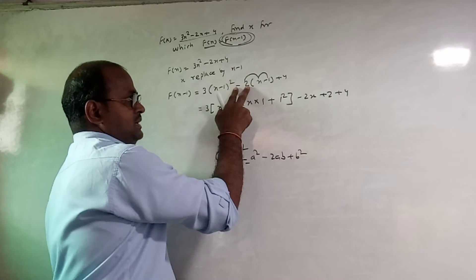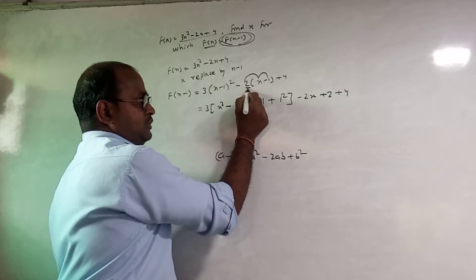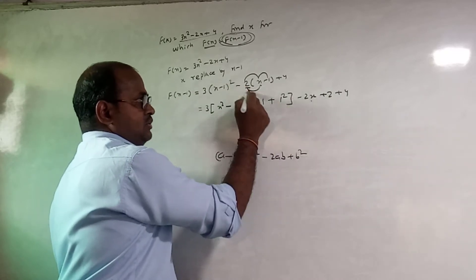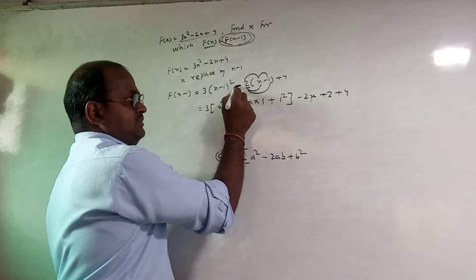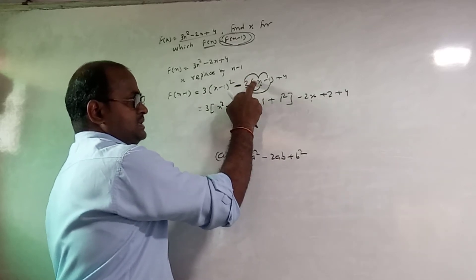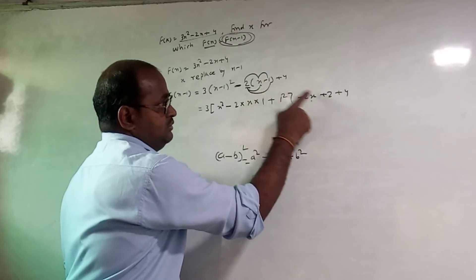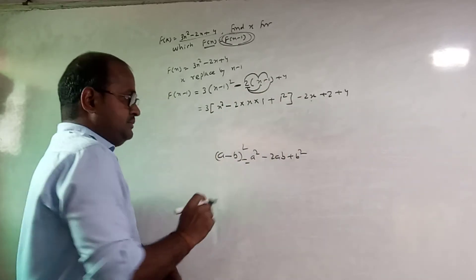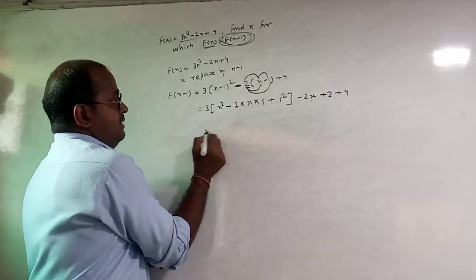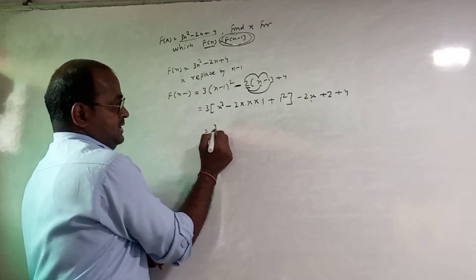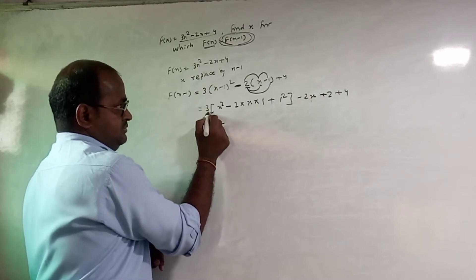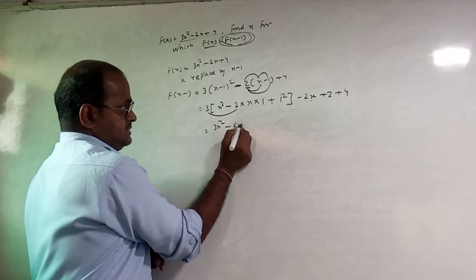Minus 2, multiply: 2 into x is 2x and 2 into 1 is 2, minus. Plus x, minus x, minus plus. 3 into x: 3x square. 3 into is 6x.